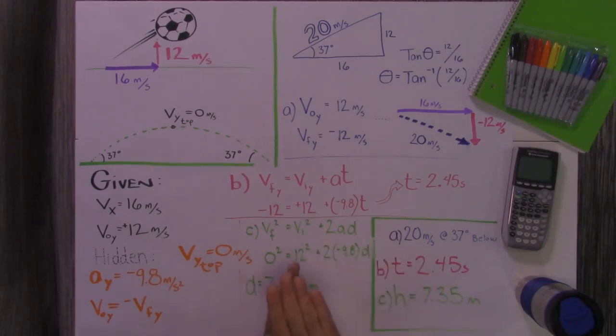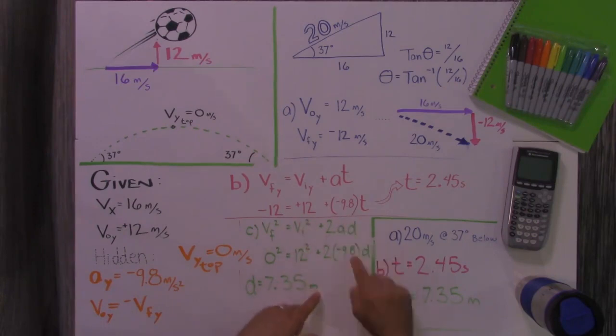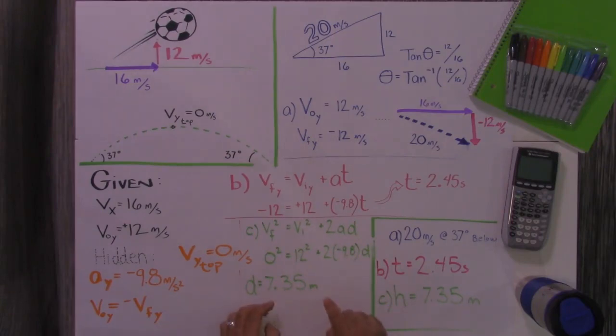So to find the height at the highest point, I used the velocity in the Y direction at the highest point. That was 0. So I plugged in the 0, plugged in the initial velocity in the Y direction, and I solved for a total vertical displacement at the highest point of 7.35 meters.